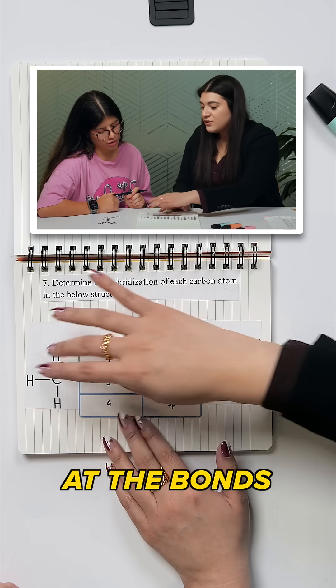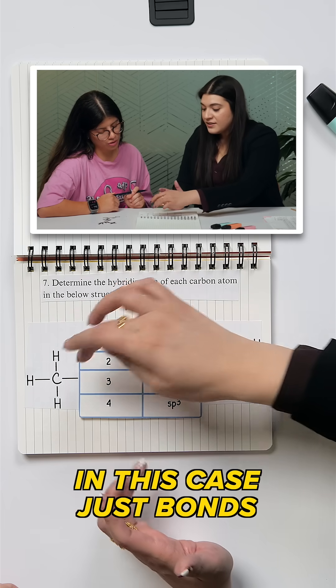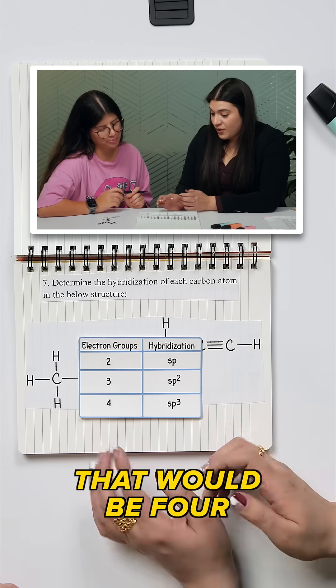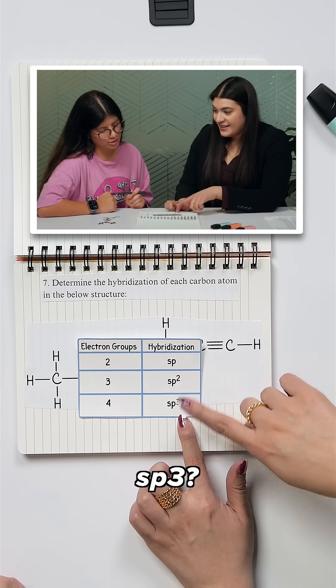I just want to look at the bonds or lone pairs, in this case just bonds, that are surrounding that atom. So that would be four. That would be four, exactly. So that would then be? SP3. Yep.